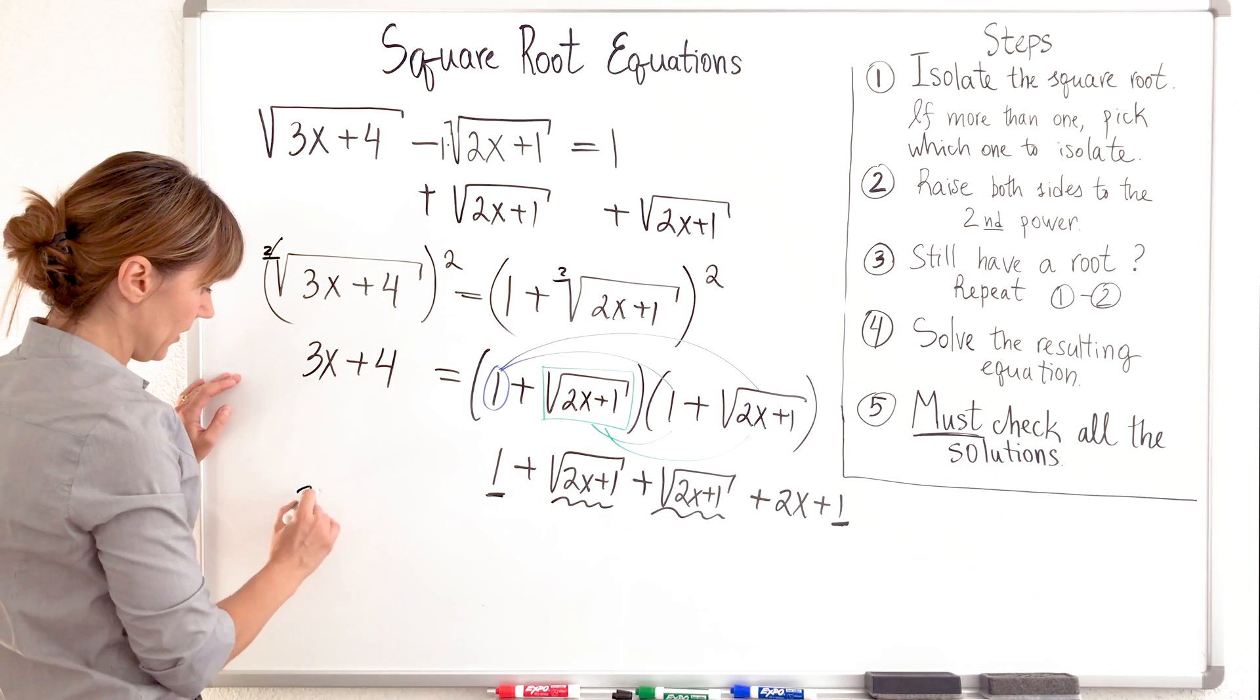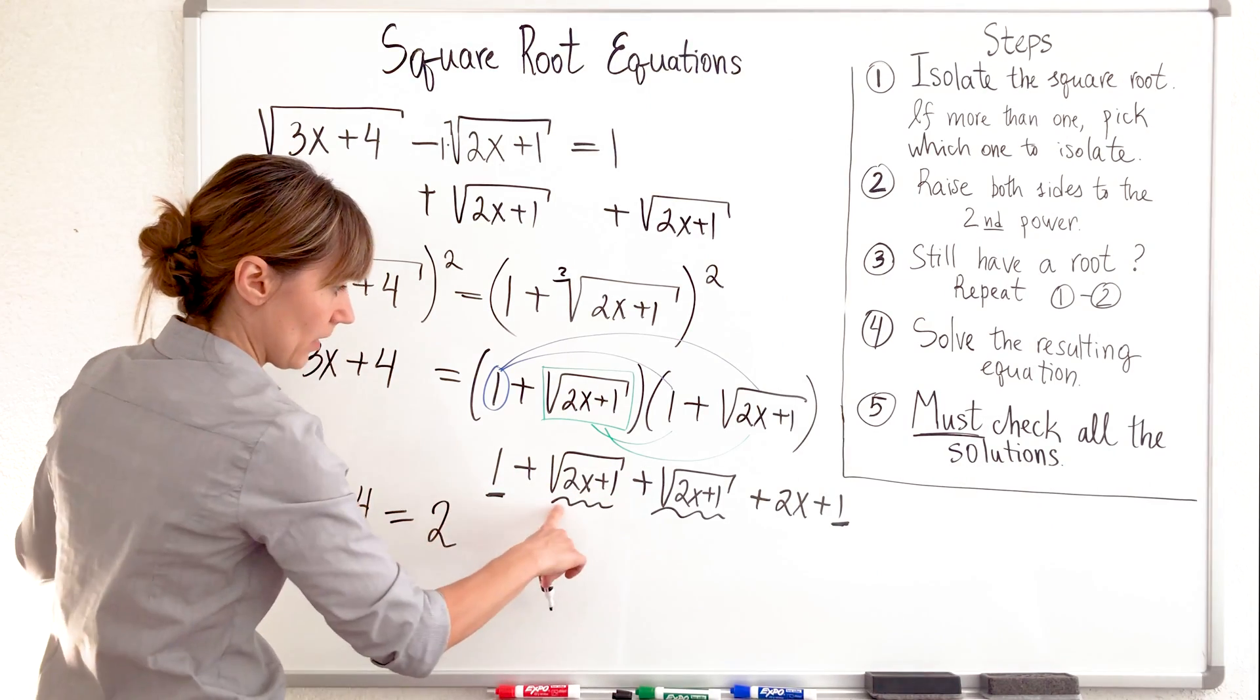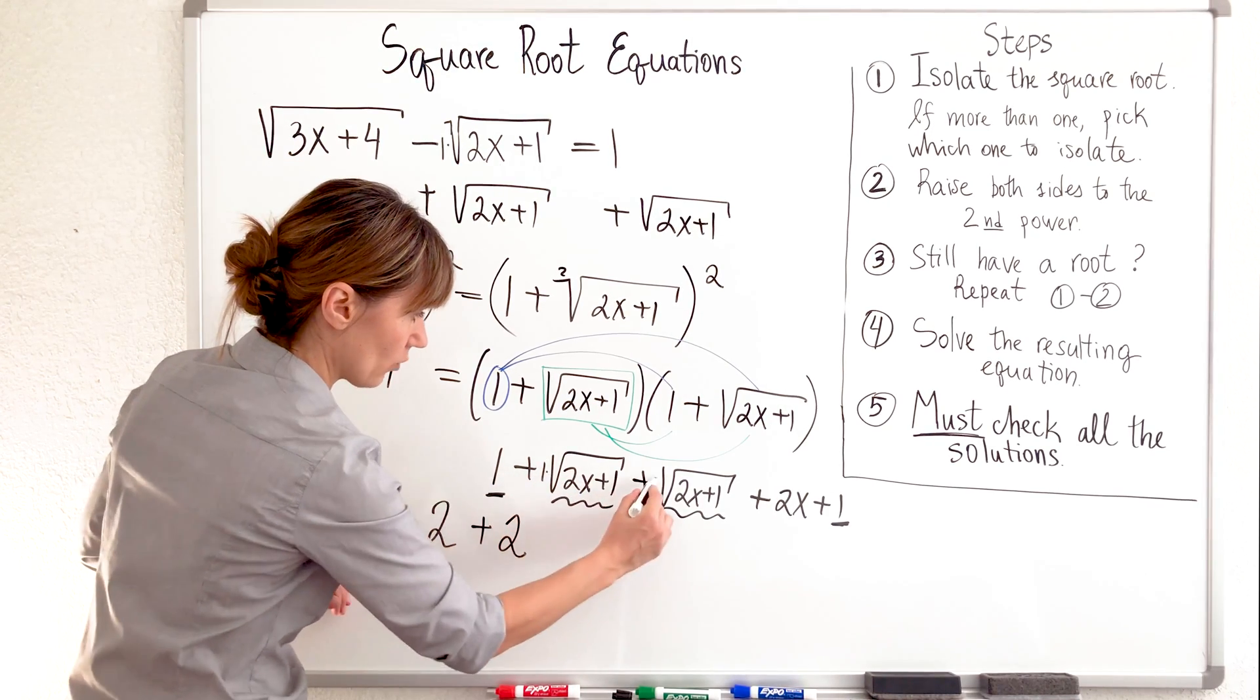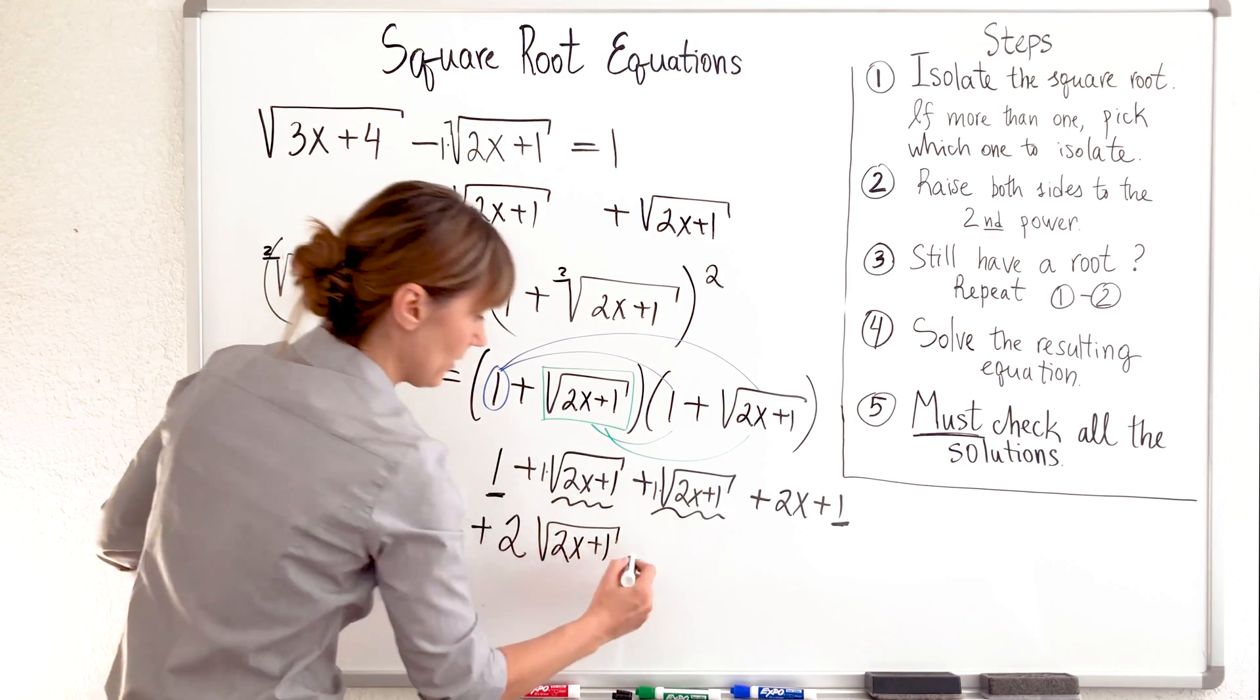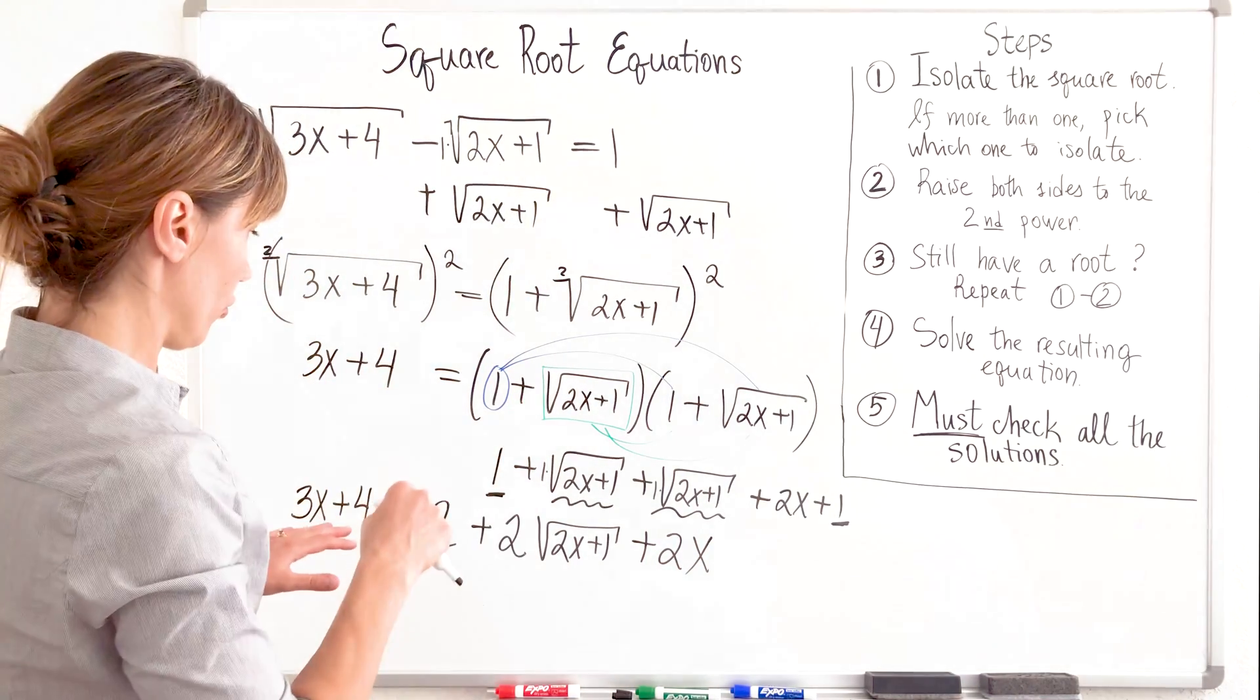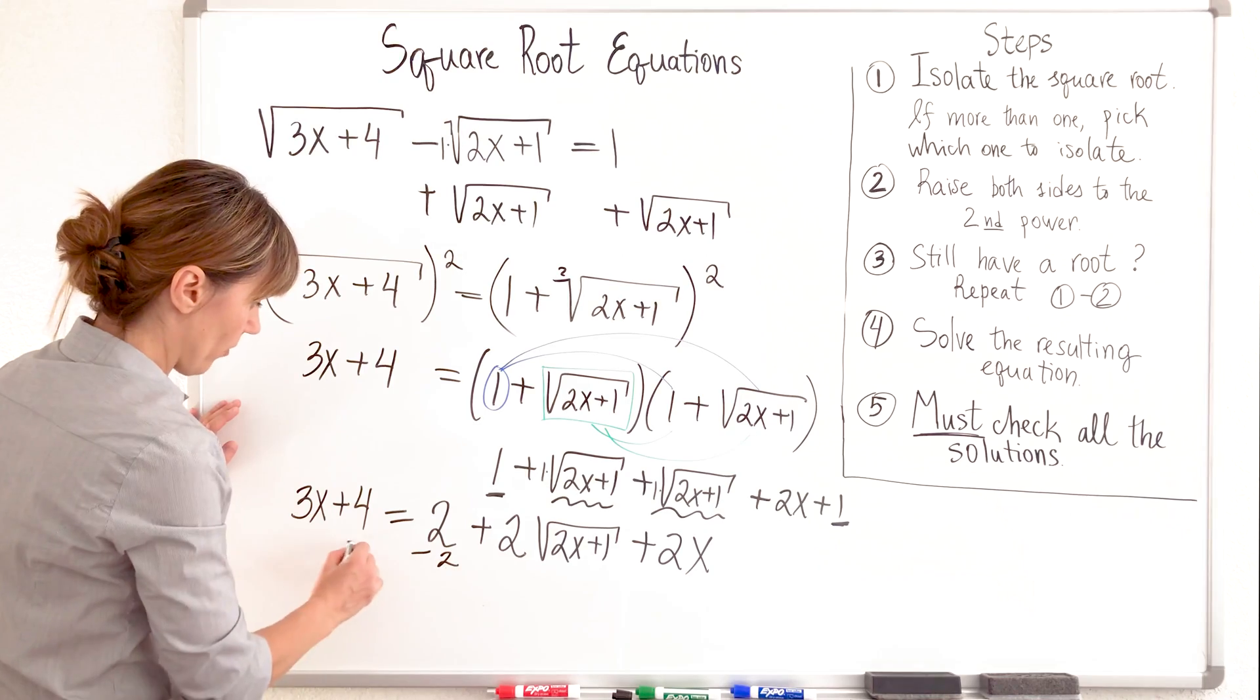So on the left side, I have 3x plus 4 equals 1 plus 1 will be 2. These two square roots, I'm putting them together. I will have 2 because it's like 1 times 1 times, right? 2 square root of 2x plus 1 and dragging my 2x. Let's stand back and just you look and I look together. Looks good to me. Okay, let's go. So what we can do? We can subtract 2 from both sides, right?